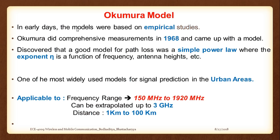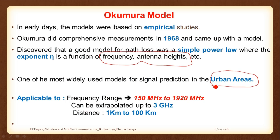Okumura discovered that a good model for path loss was a simple power law where the exponent eta — the path loss exponent — is a function of frequency and antenna height. This was the first time someone coined that the factor eta was somehow a function of both the operating frequency and the height of the antenna at the transmitter as well as the receiver. This was a discovery from the dataset, not an analytical proof.